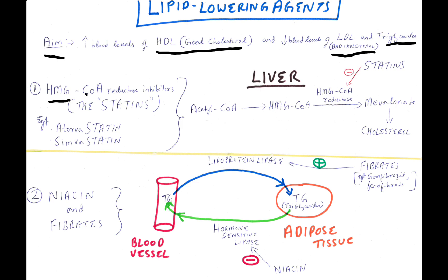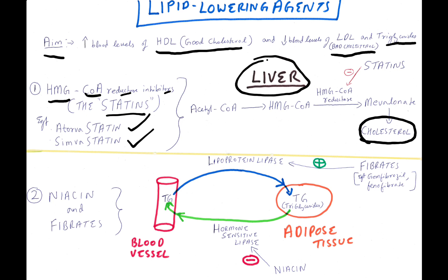Number one is HMG-CoA reductase inhibitors, also called statins. Examples: atorvastatin, simvastatin. The synthesis of cholesterol occurs in the liver from acetyl-CoA. Acetyl-CoA gives rise to HMG-CoA, and HMG-CoA under the action of HMG-CoA reductase gives rise to mevalonate.